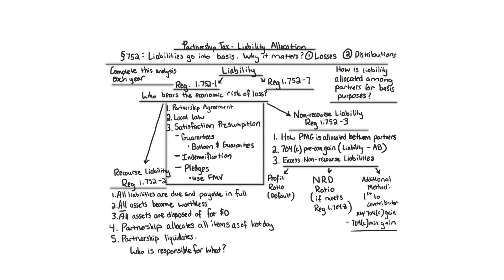Under Section 752, liabilities go into basis, which matters because later when partners have losses or distributions, it makes a big difference in tax consequences. You can take more losses if you have more basis, or less of the cash distributions are taxed. We're specifically asked at the end of year one — the year of formation. It's simple here because there are no transactions and land has no depreciation. The key question is: how is the $160 liability allocated among the partners for basis purposes?